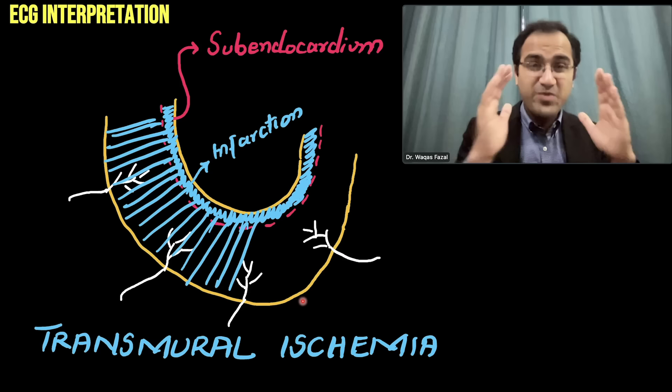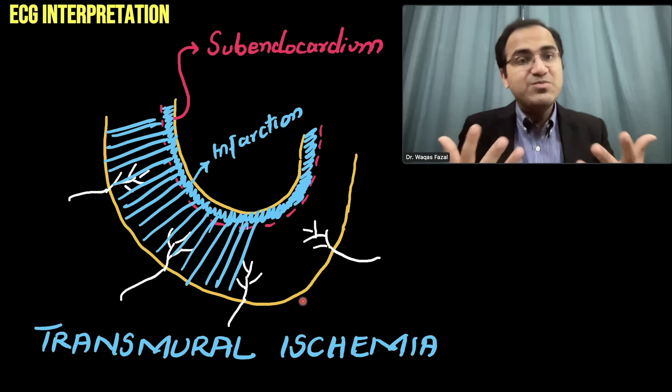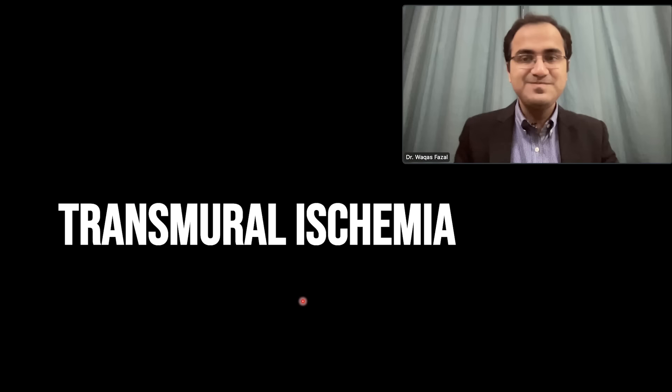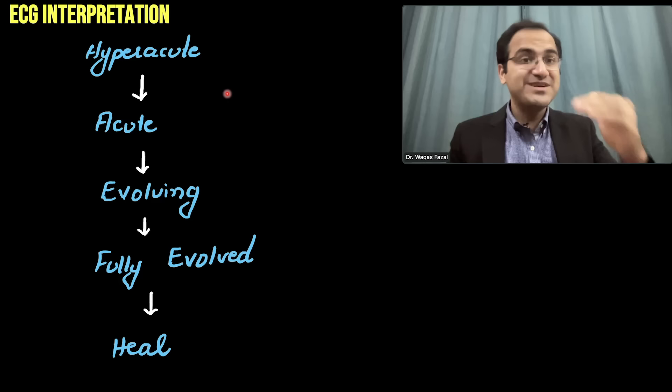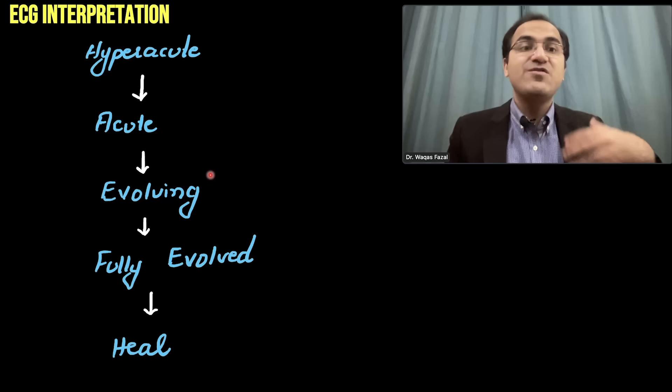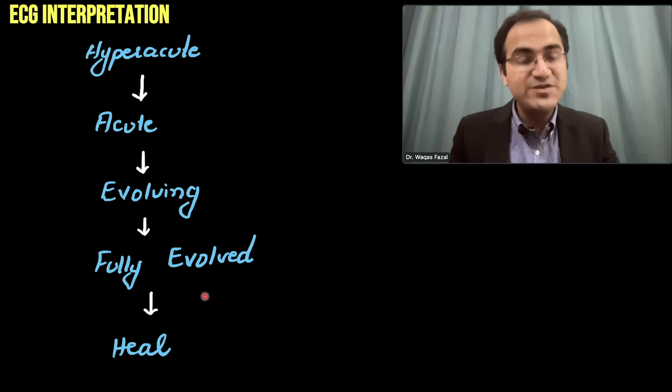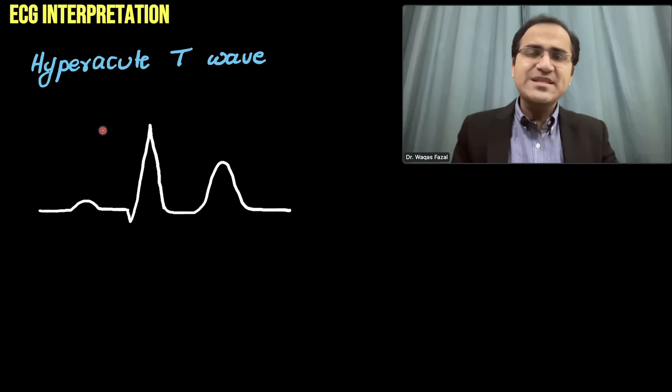Understanding transmural and subendocardial ischemia is important because they present differently on ECG. In transmural ischemia, ECG changes go through certain phases: the initial hyper-acute phase, then the acute phase, followed by the evolving phase, then the fully evolved phase, and finally the healed phase — each showing different ECG changes.